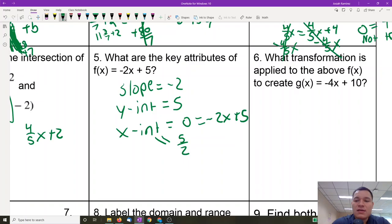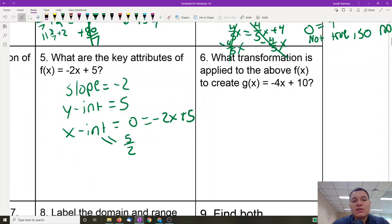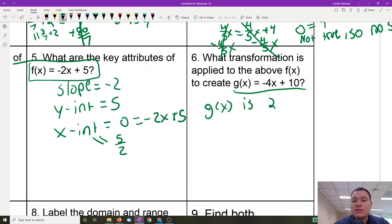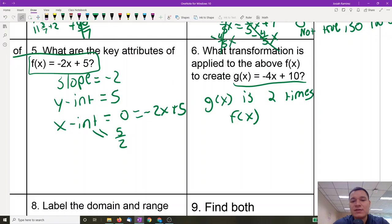The only other thing you could say is that this is, compared to the parent function, like in this next one, how do they compare? Let's just look at number 6. What happened to the previous question in order to make this g(x) right here? What happened to f(x) to get -4x + 10? If we compare the slopes, this one's negative 2, this slope is negative 4. If we compare the y-intercepts, the first one has 5 and the second one has 10. So all that happened was g(x) is twice or 2 times f(x). And that's it. That's the only transformation that happened. There was nothing else other than that.